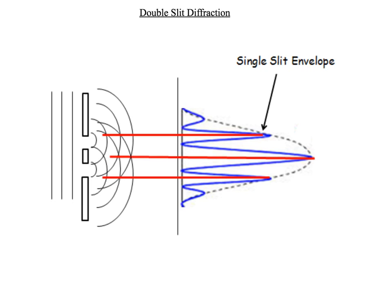First of all, take a look at this diagram here. We've got this source of coherent waves approaching and passing through these two slits. Coming out of the slits you get two sets of diffraction, and where they cross over you get constructive interference, and in the regions in between you get destructive interference.